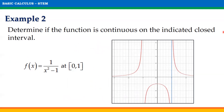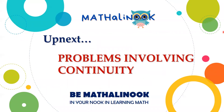Observing the graph of the function on the closed interval [0, 1], there is an asymptote at x = 1, which causes the discontinuity of the function on the given interval. I hope you have understood the lesson. For the next video, we will discuss problems that involve continuity of functions. Thank you so much for listening, and see you in our next discussion.